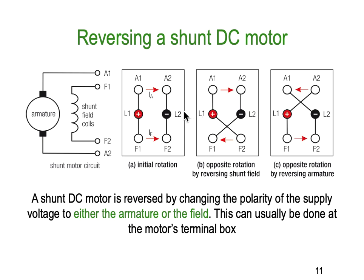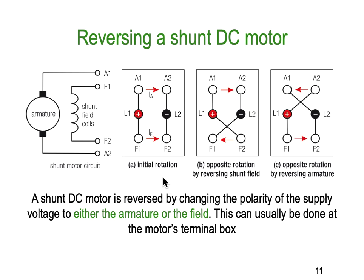Reversing a shunt DC motor is a little more tricky because quite often the shunt and the armature are being fed together at the same time. Normally we would have our shunt and our field connected in parallel with our supply. We either have to reverse the field or we have to reverse the armature — but not both. A shunt DC motor is reversed by changing the polarity of the voltage to either the armature or the field, and this can be done at the motor's terminal box.